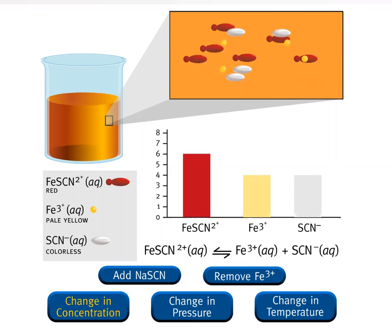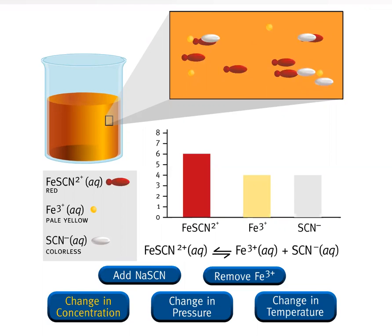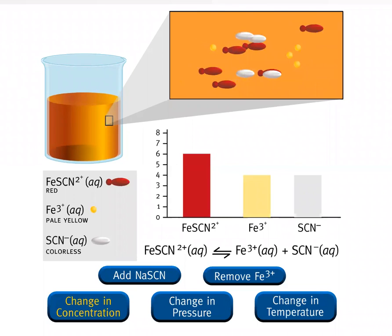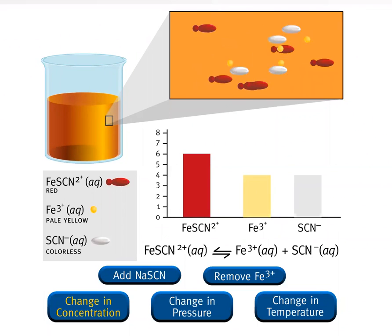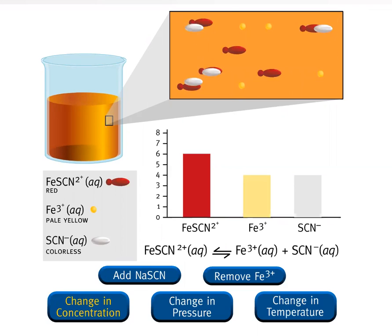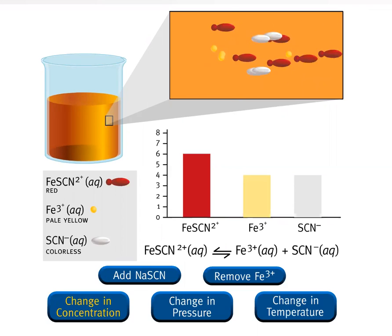Fe(SCN)²⁺ (aqueous), which is red, is in equilibrium with iron 3-plus ions, which are pale yellow, plus SCN⁻ (aqueous), which is colorless.